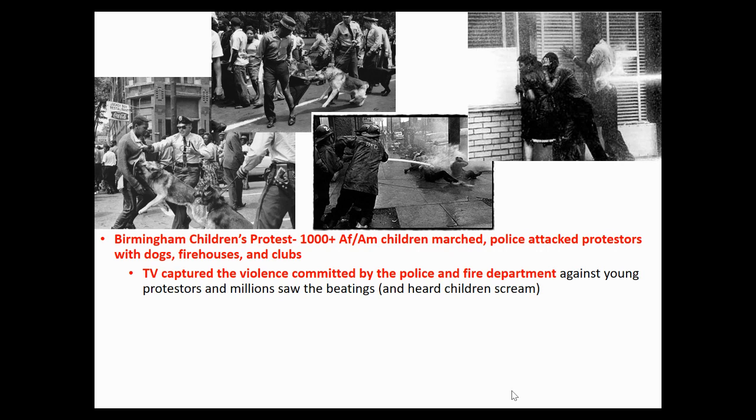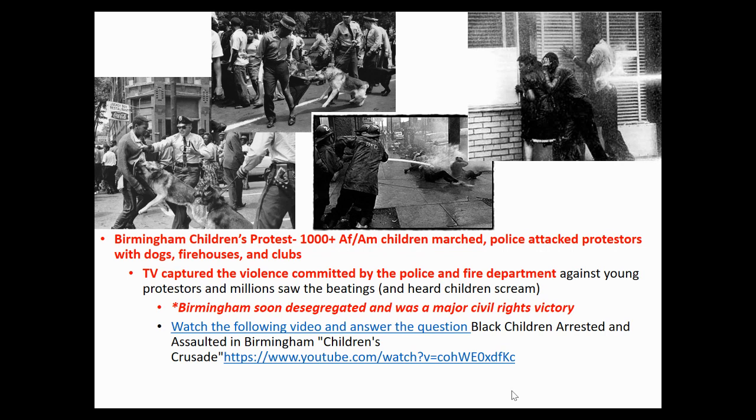The most famous incident in Birmingham is the Birmingham Children's Protest of 1963. Over 1,000 African American children marched — their parents had all been arrested from so many prior protests, so the children took it upon themselves to get out into the streets. This is when the police attacked the protesters. Chief of Police Bull Connor ordered his police to use dogs and firemen to use fire hoses to break up the protests — fire hoses described as hitting like a sledgehammer. These protests were captured on television, so what was happening in Birmingham went out all over America. People could hear the children screaming, and Birmingham soon desegregated — a major civil rights victory.